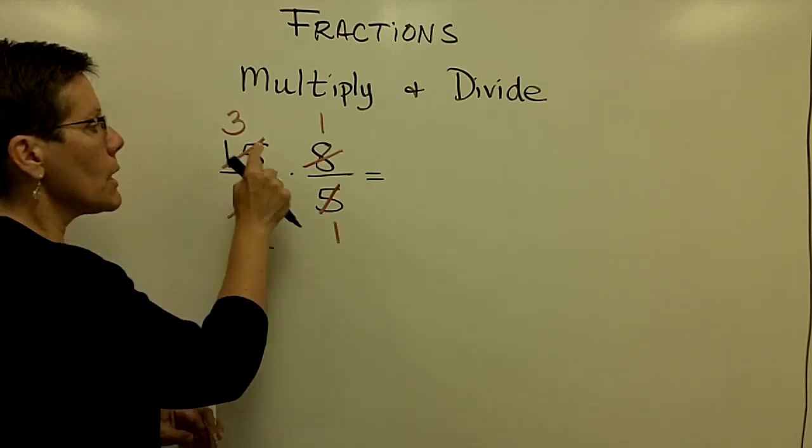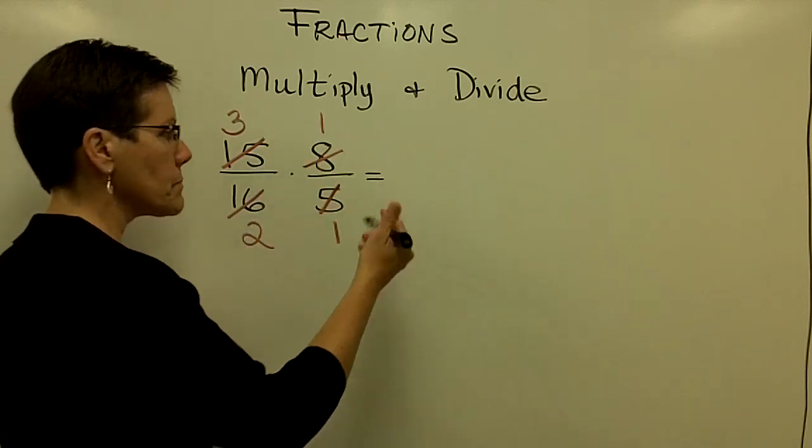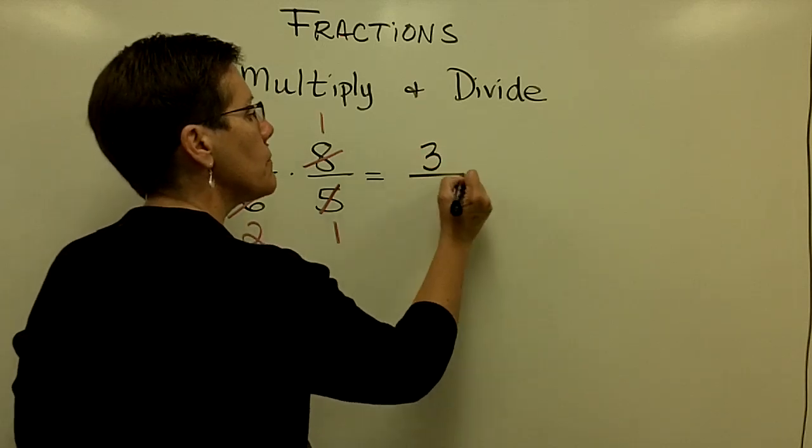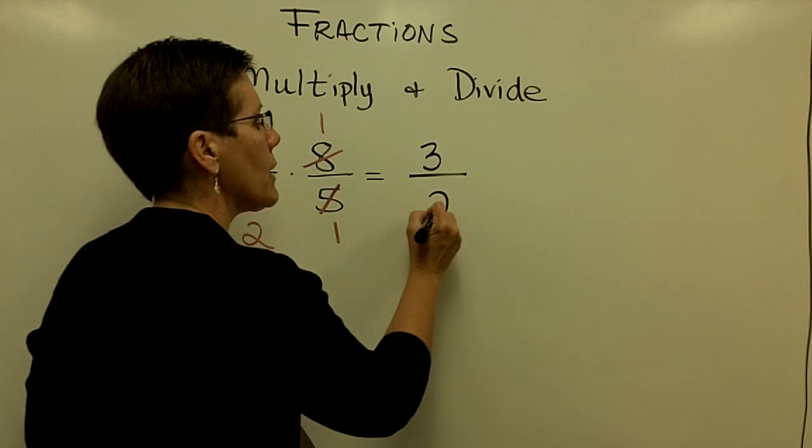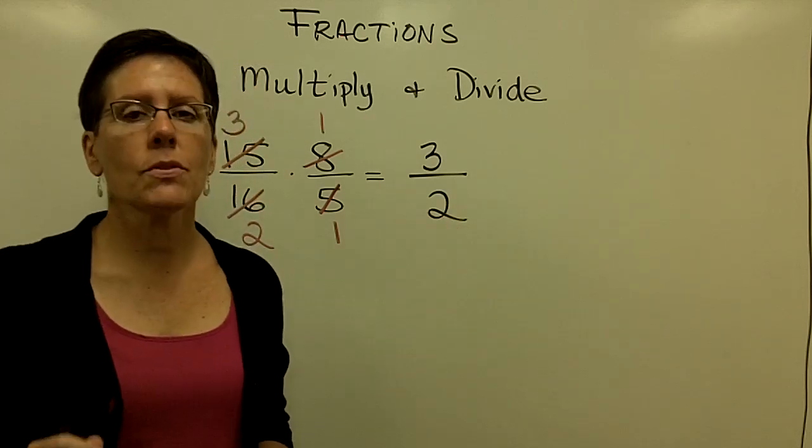So I'm going to take the numerator, three times one, and get a value of three. And in the denominator, two times one, and get a value of two. And my answer is three halves, or one and a half.